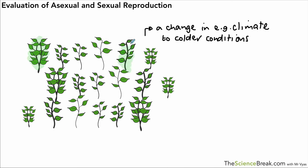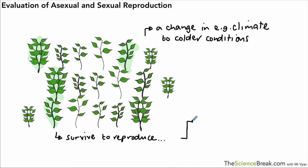So for example this one, or this one, or this one might be more resistant to the cold and therefore are more likely to survive and reproduce. They survive to reproduce, and this is the basic idea behind natural selection.